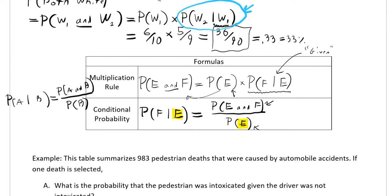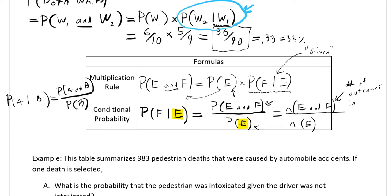For example, if I got an ace and a two drawing two cards from a deck, getting an ace and a two or a two and an ace is the same thing. You can also represent this using n notation: n(E and F) over n(E), where n represents the number of outcomes in each event. This is more how we're going to use conditional probability — it avoids fractions over fractions and lets us work with whole numbers instead.